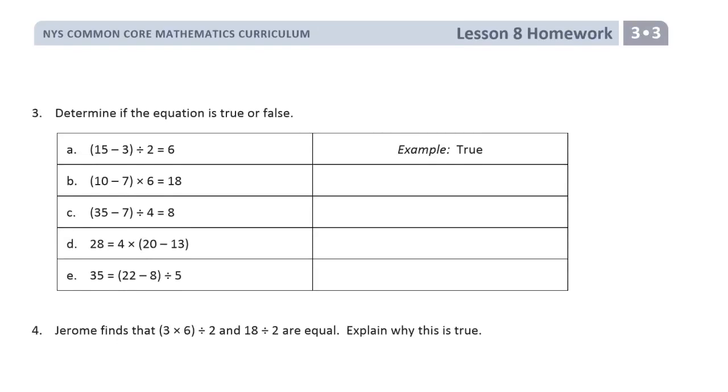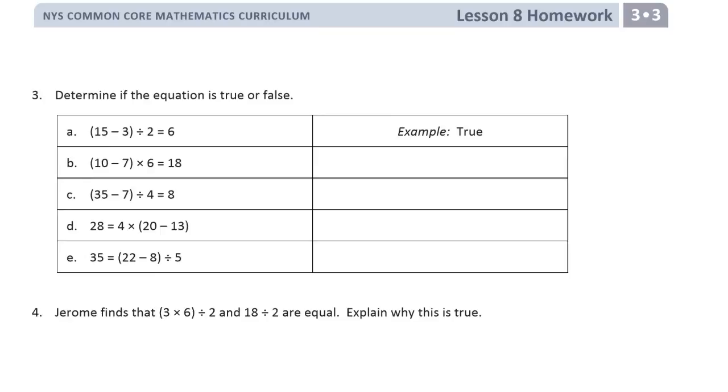Lesson 8 homework. Page 2. Determine if the equation is true or false. So this one here, they figured out it's true. But we want to show some evidence too. So in this space here, either here or here, however you want to do it, you got to show your evidence for how you figured out whether it's true or false. And we do that by looking at the 10 minus 7. That's 3. So we should have 3 times 6 equals 18. True.